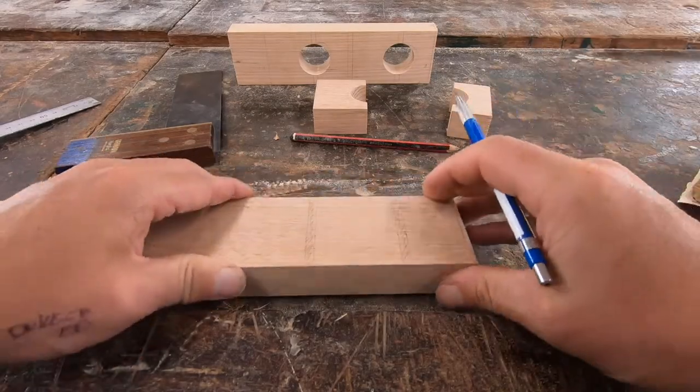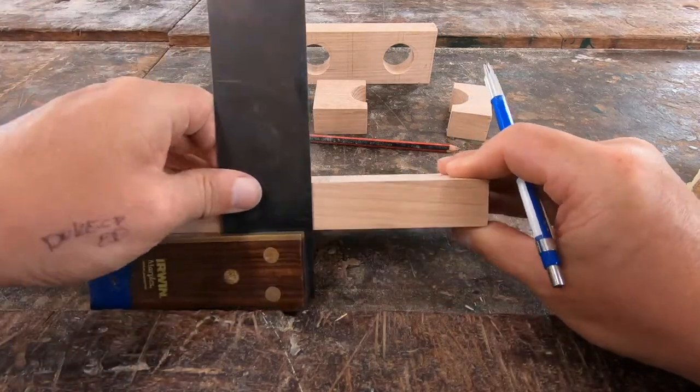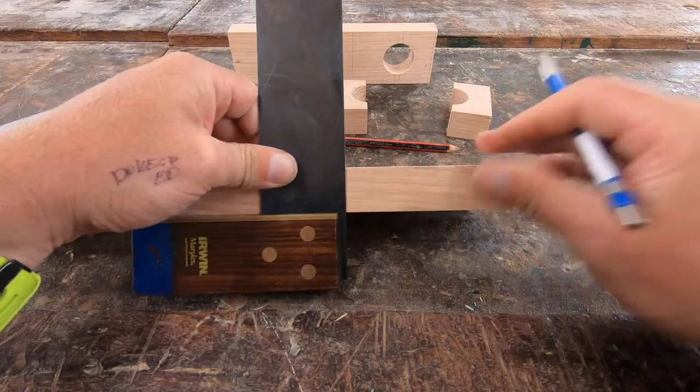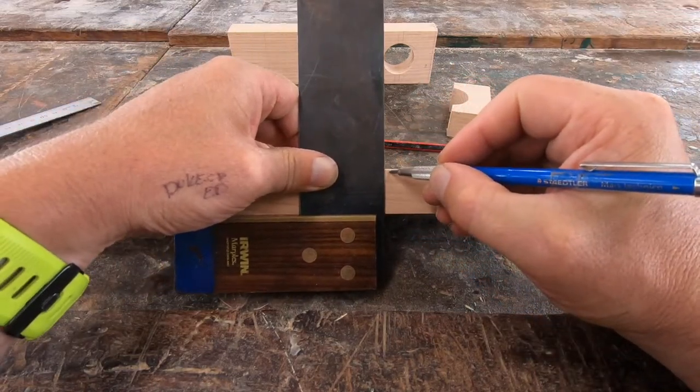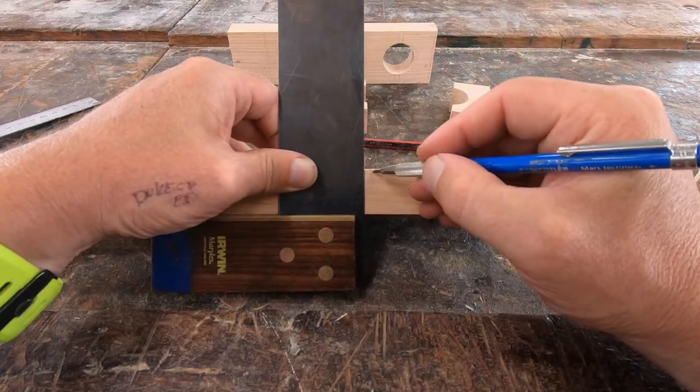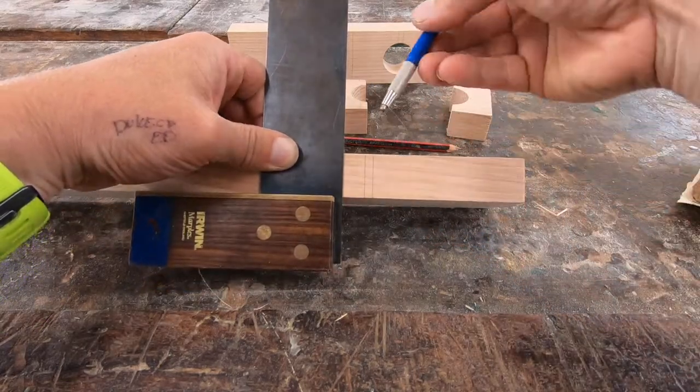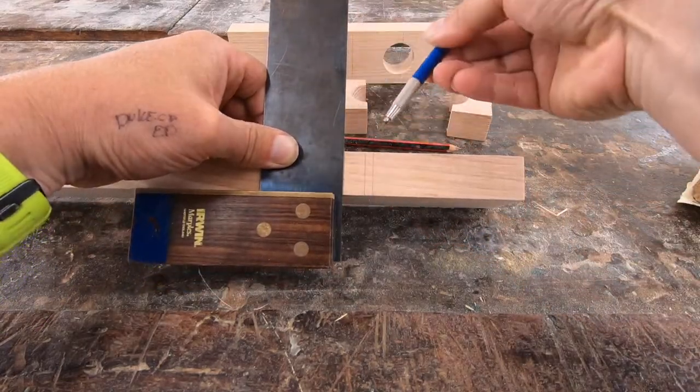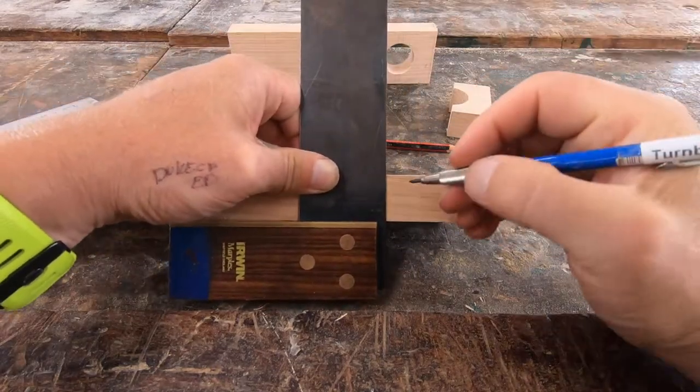Now to do those lines we also need to have lines down the side here. So I'm going to put my tri-square on the side here like this. I'm going to put my pencil in line with where it was and I'm going to do those lines on the side as well. That's so when we're doing a cut we know that we're going to be cutting straight down, we're not going to be cutting on any kind of angle. I'm going to do that to here as well.